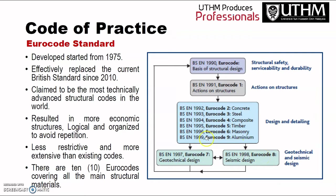For this structural design subject, we will use the Euro code standard. The Euro code standard was developed starting from 1975 and effectively replaced the current British Standard. It is claimed to be the most technically advanced structural code in the world, resulting in more economic structures — logical and organized to avoid repetitions, and also less restrictive and more comprehensive than existing codes. There are ten Euro codes covering all the main structural materials.